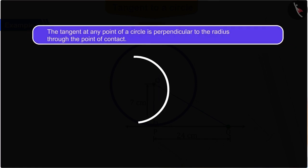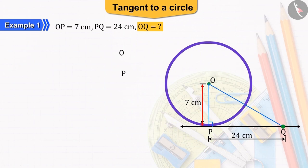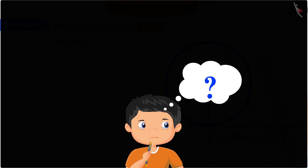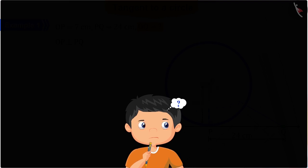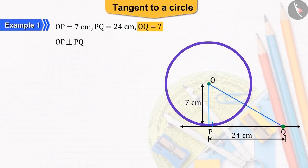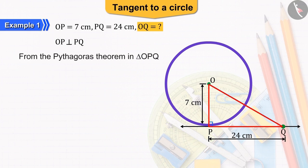We know that the tangent at any point of a circle is perpendicular to the radius through the point of contact. So, OP will be perpendicular to PQ. Can you tell what to do next? Absolutely right! We can use Pythagoras theorem in the triangle OPQ.